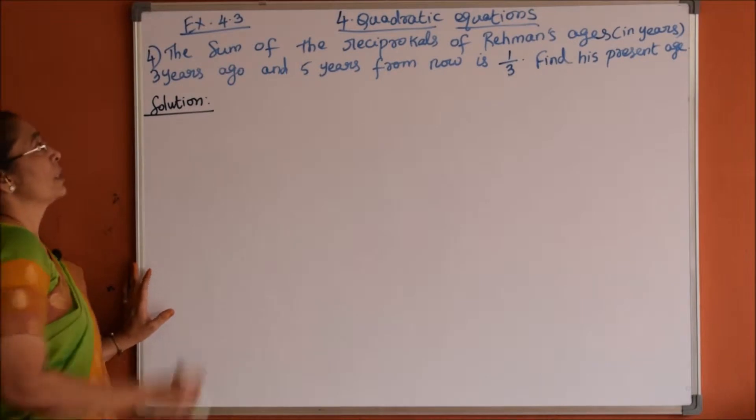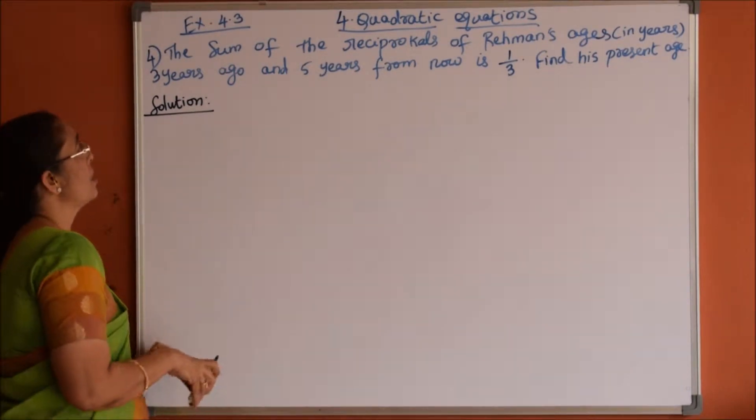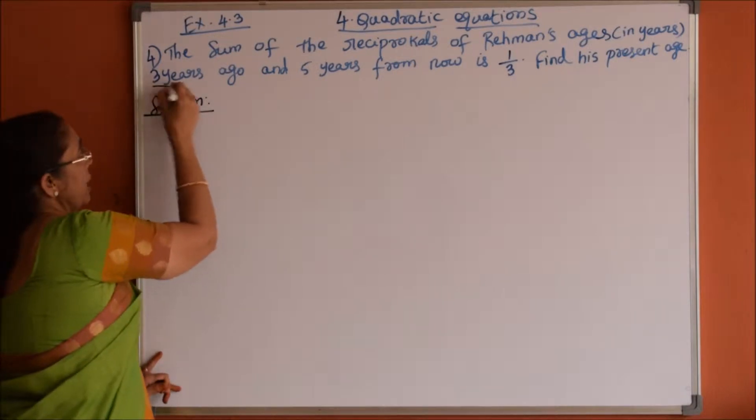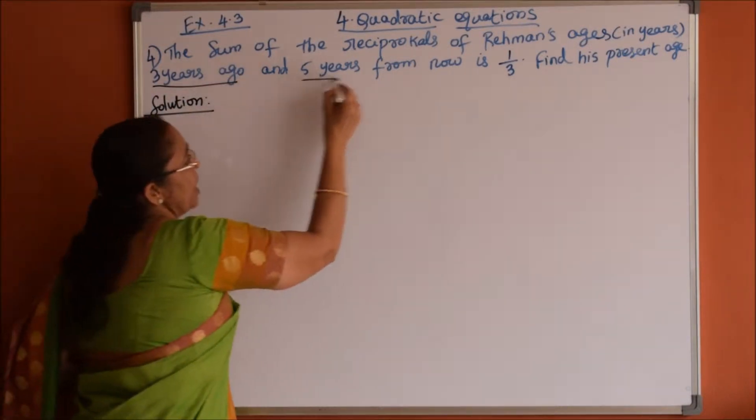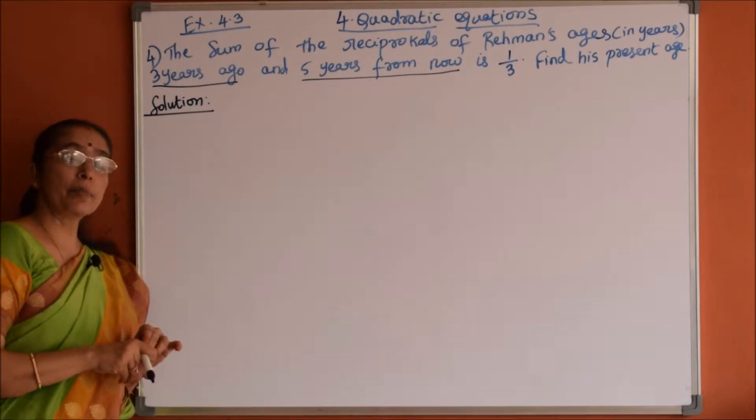Fourth problem: the sum of the reciprocals of Rahman's ages in years, 3 years ago and 5 years from now is 1 by 3. Find his present age.